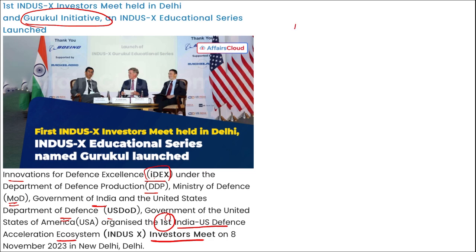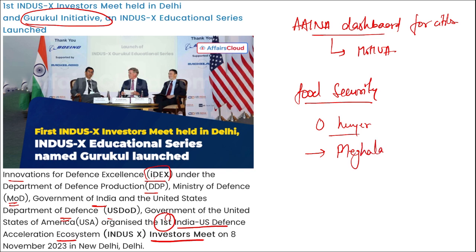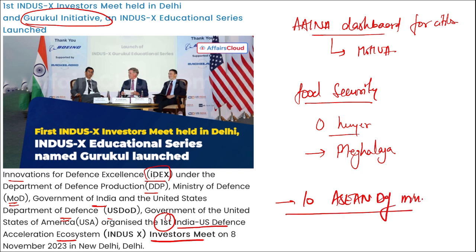INA Dashboard for cities — this is a portal launched by the Ministry of Housing and Urban Affairs. Which state launched a food security campaign to achieve zero hunger? It was launched by Meghalaya. The 10th edition of the Asian Defense Ministers Meeting will be held in Jakarta, Indonesia.